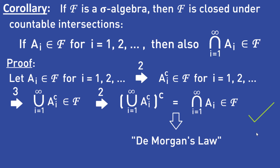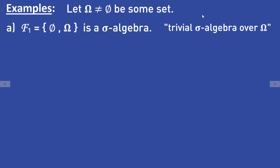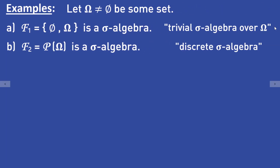Now let's take a look at some examples of sigma algebras. Let omega be a non-empty set. The family consisting only of the empty set and the set omega is a sigma algebra — it is called the trivial sigma algebra over omega. The power set P of omega is also a sigma algebra, called the discrete sigma algebra.